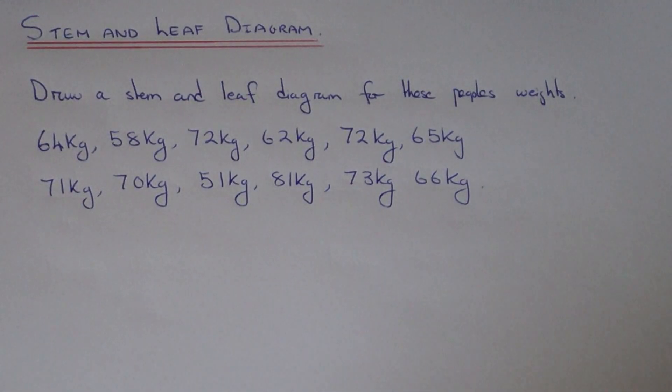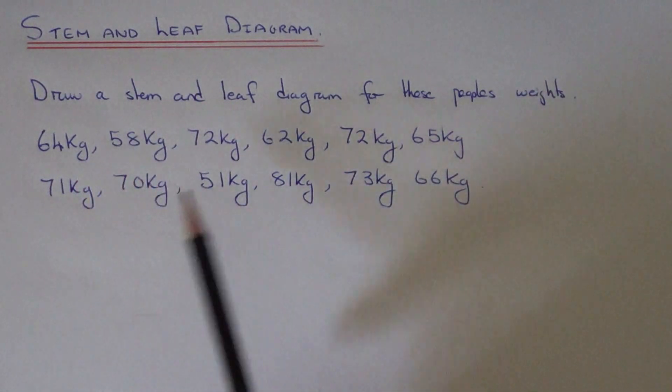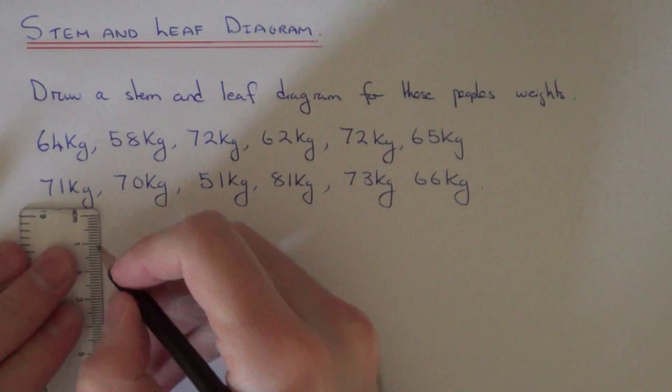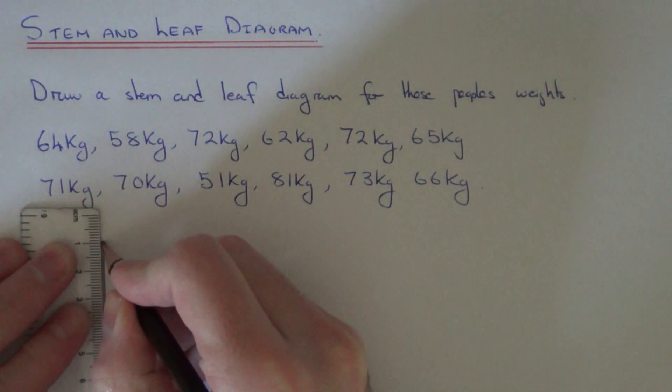Today I'm going to show you how to draw a stem and leaf diagram. In this example, we've got the weights of 12 people. The first thing you need to do is draw a vertical line on the left hand side of your page.